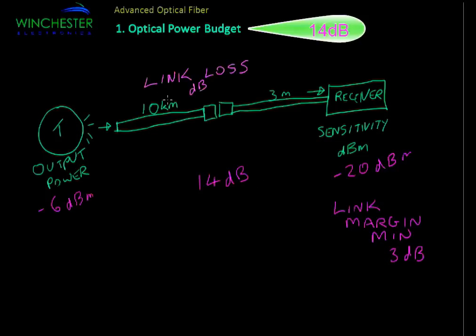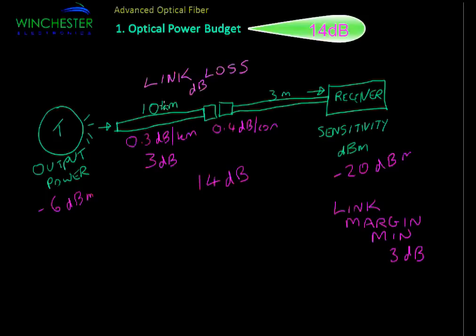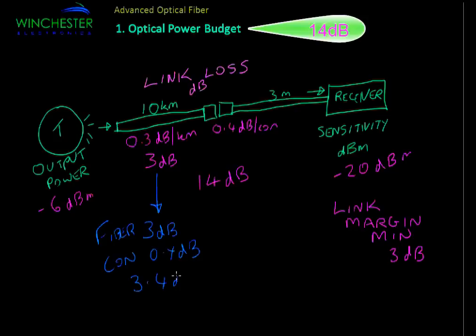With 10 km of single mode fiber at a loss of 0.3 dB per kilometer, we have 3 dB of loss in the fiber section. We also have one connector. Different connectors have different insertion losses, but typical is around 0.3 to 0.5 dB for these kinds of calculations. To be conservative, we use 0.4 dB per connector. For the short 3-meter fiber we won't count that loss. So the total link loss is 3 dB for fiber plus 0.4 dB for the connector, giving us 3.4 dB of total link loss.